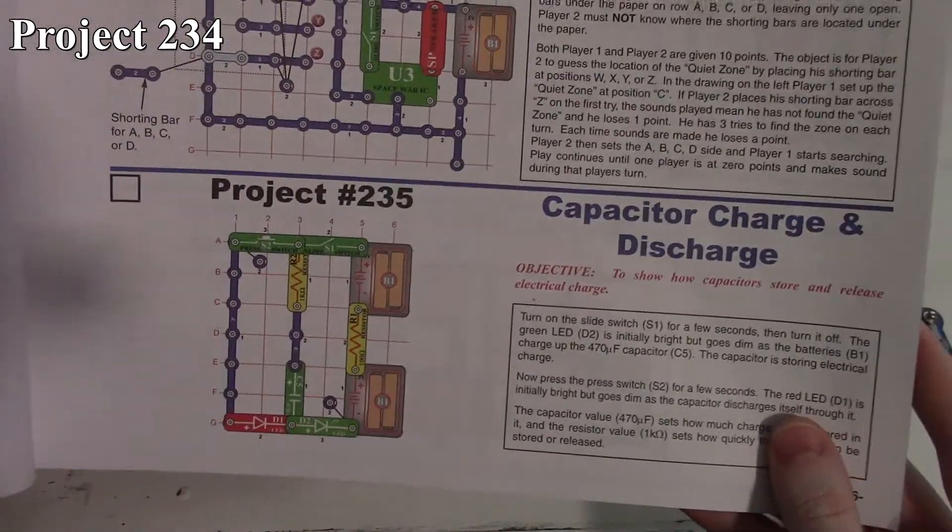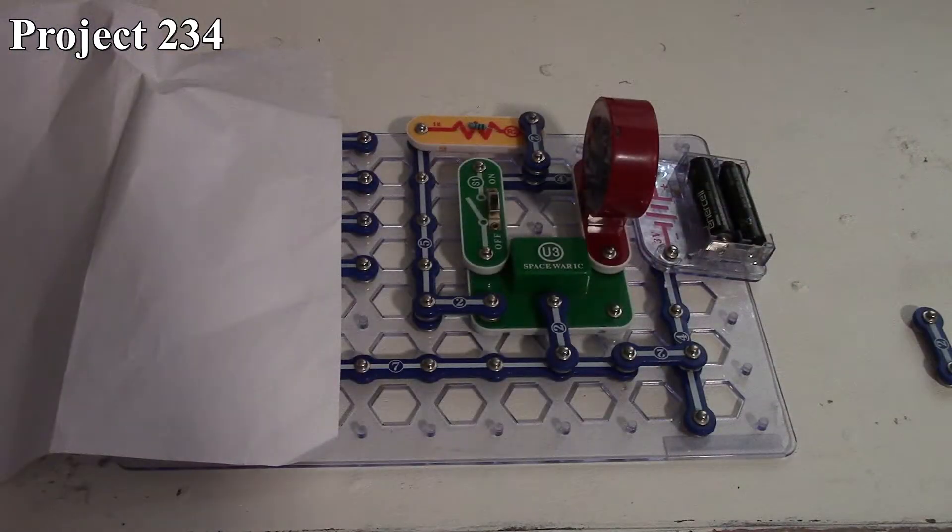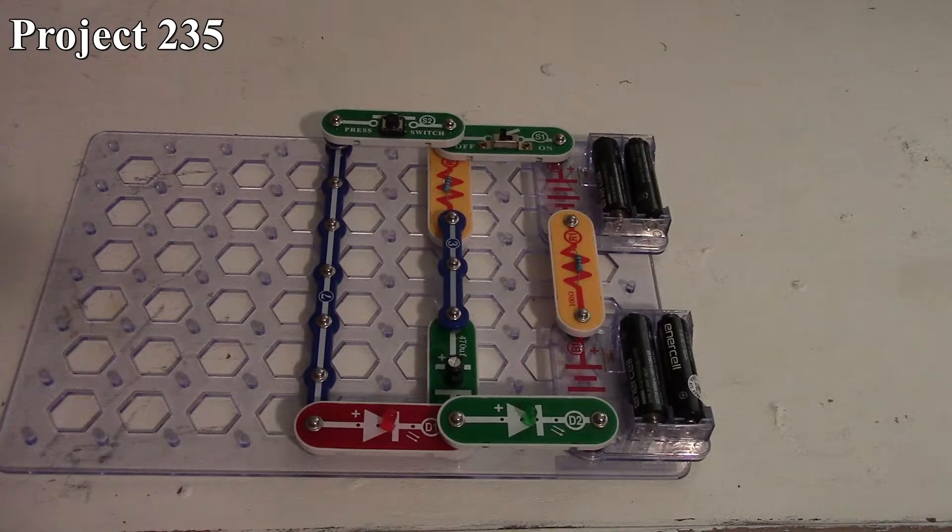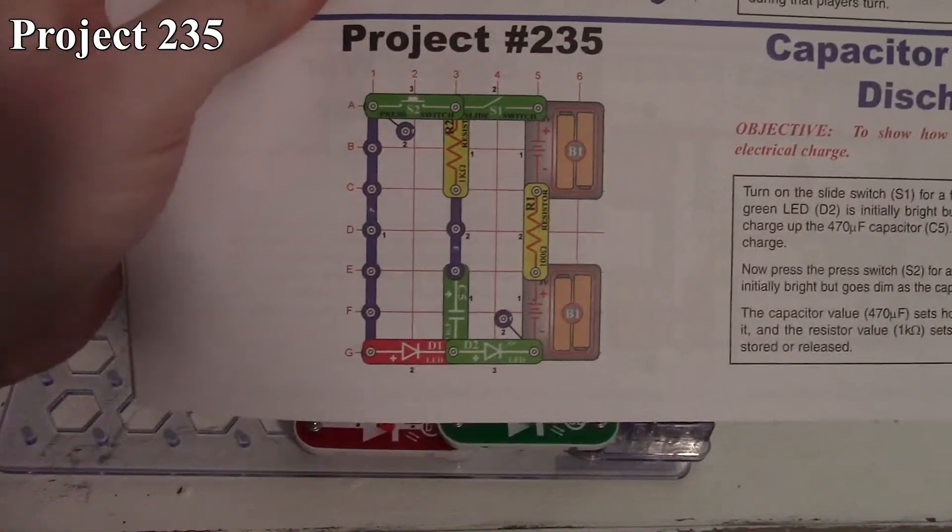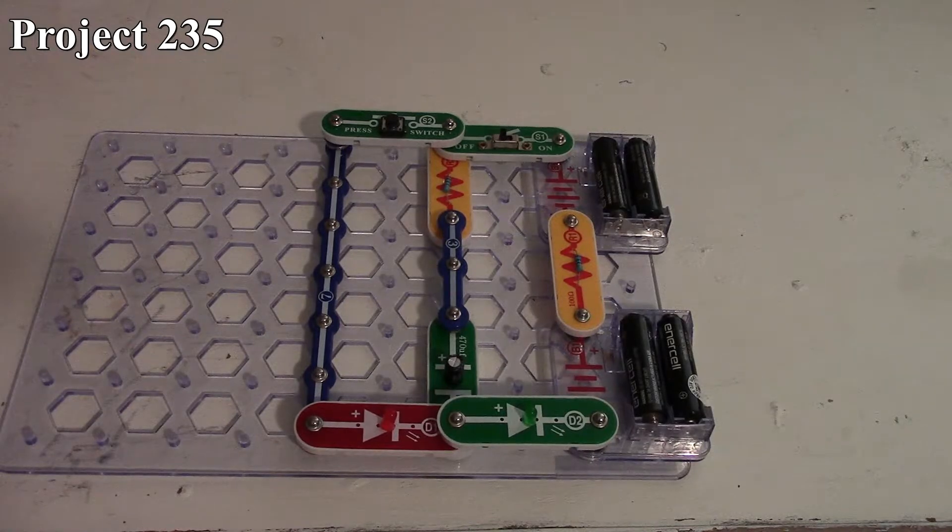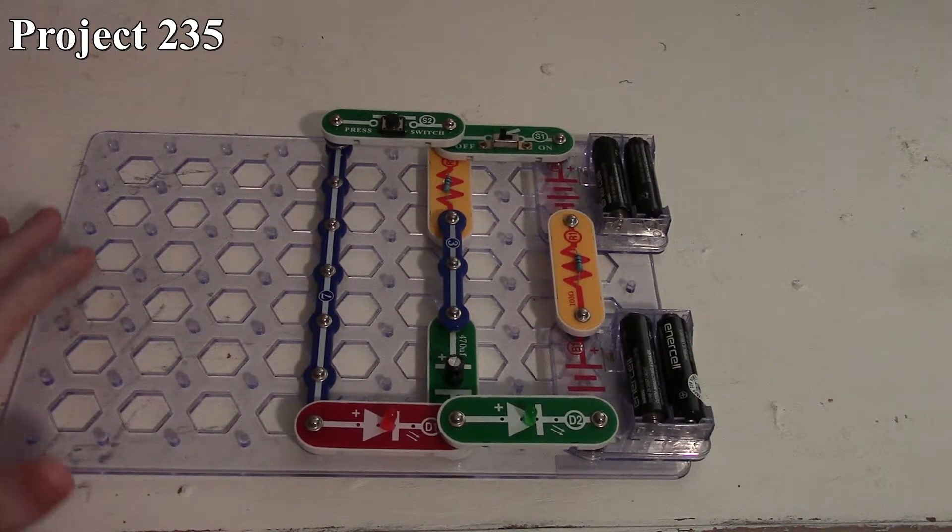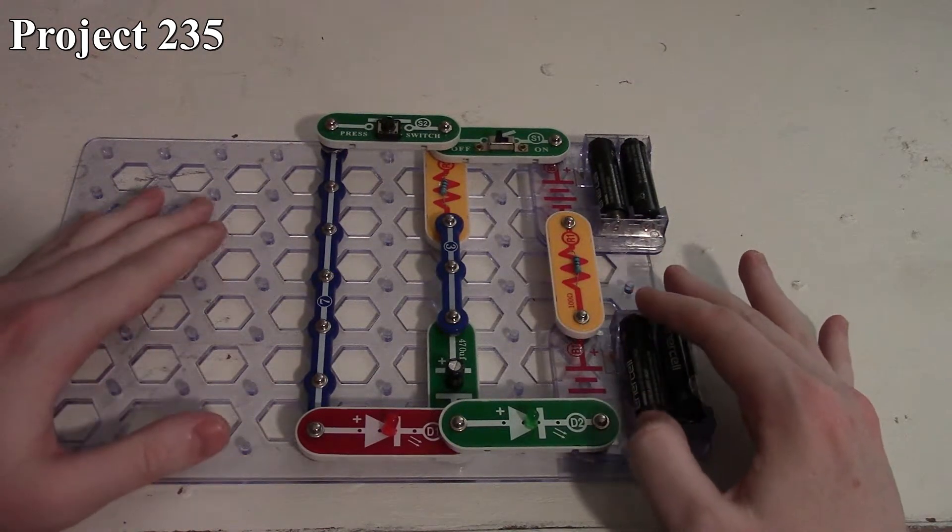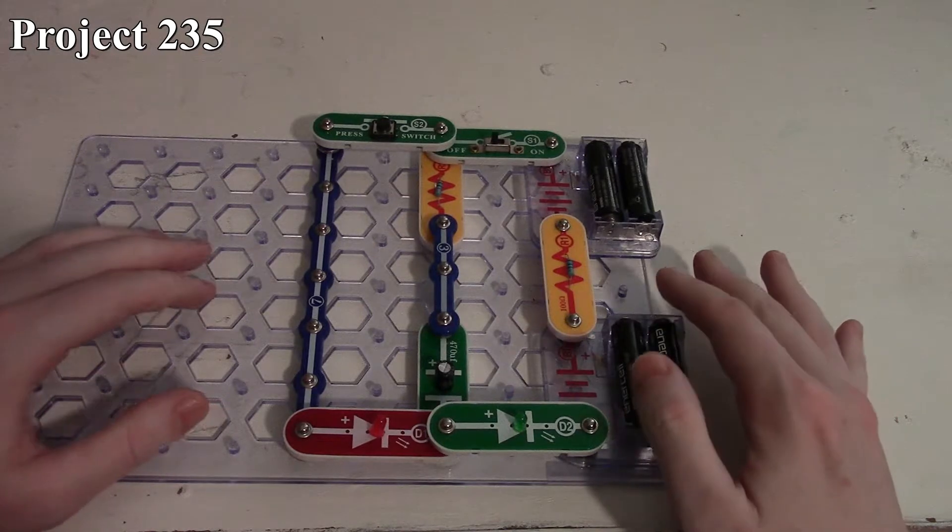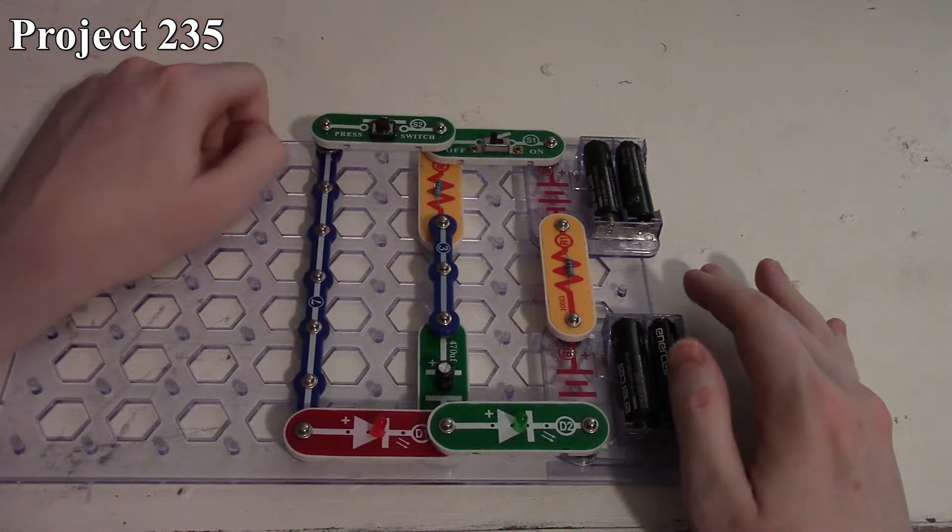Now project 235 is our capacitor charge and discharge. There it is in the book, there it is on the board. Essentially, we've talked about capacitors in previous circuits and how capacitance and charging affects the operation of a circuit.